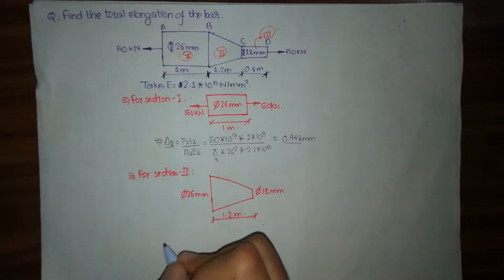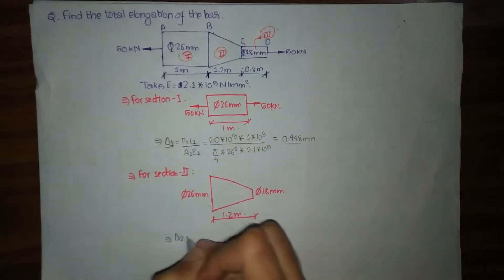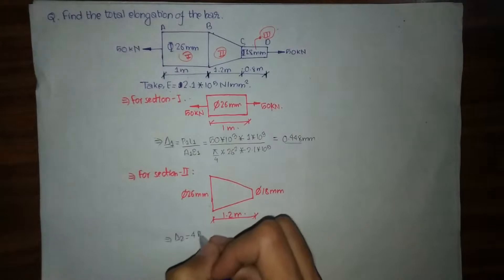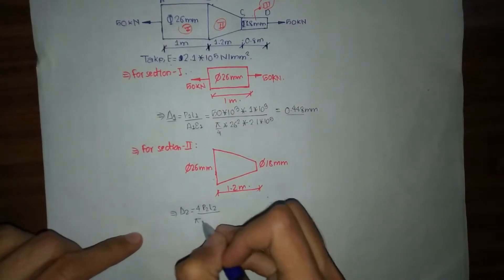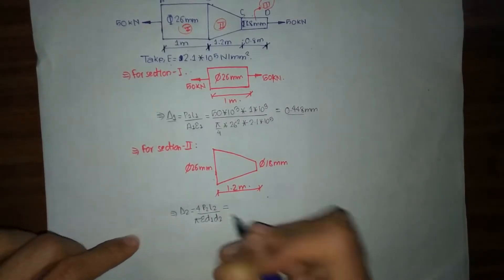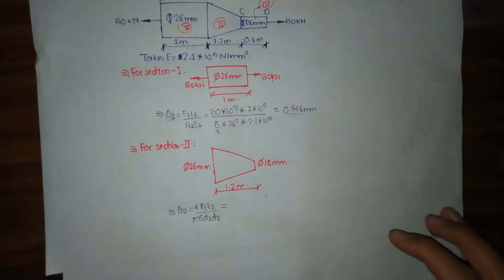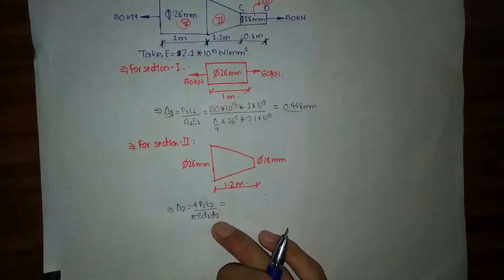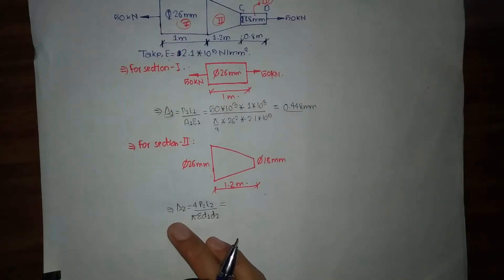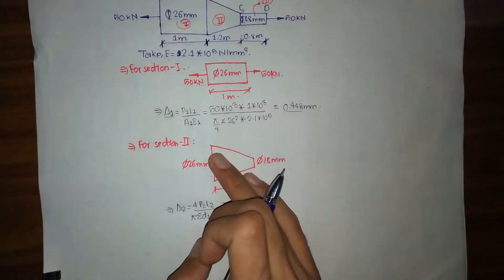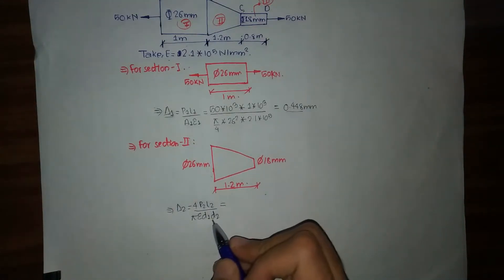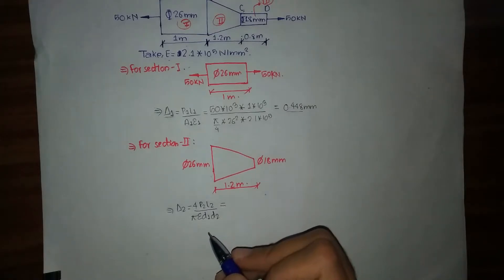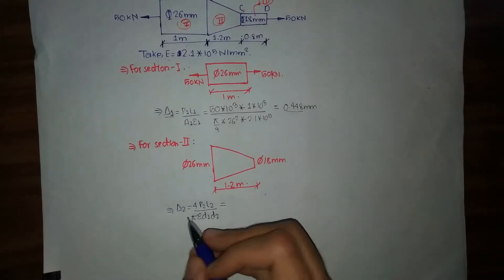For the uniformly tapering circular bar, the deformation formula is δ₂ = 4P₂L₂ / (πE·D₁·D₂). You can find the link to the proof of this formula in the description box below.